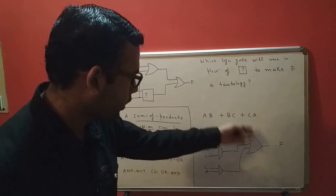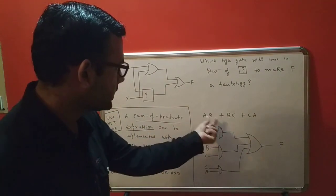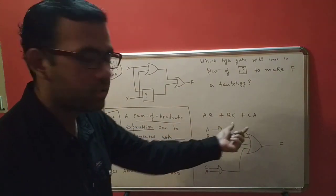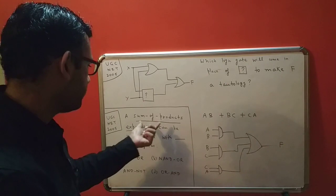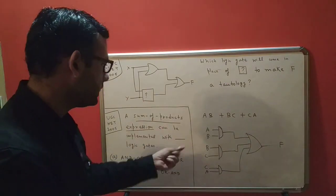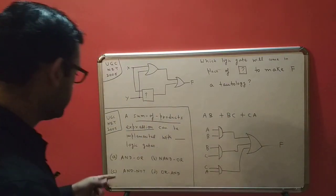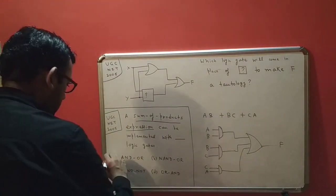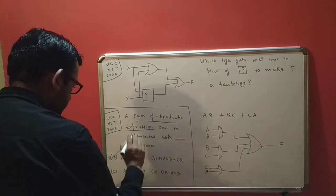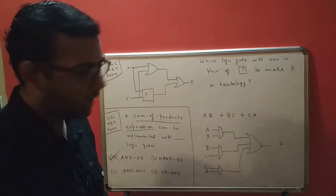So what is happening: we have three AND gates at the first level and an OR gate at the final level. This is a sum of products expression, so a sum of products expression can be implemented with AND gates and OR gates — which is the correct answer, option A.